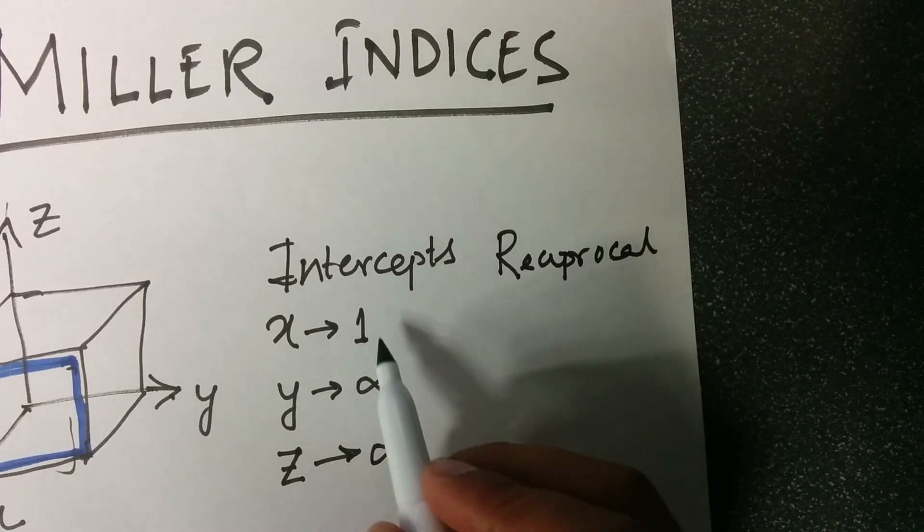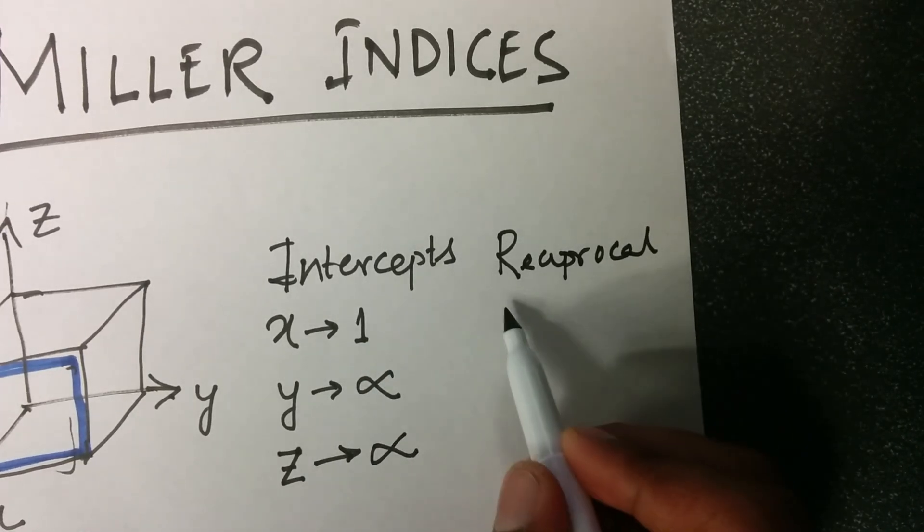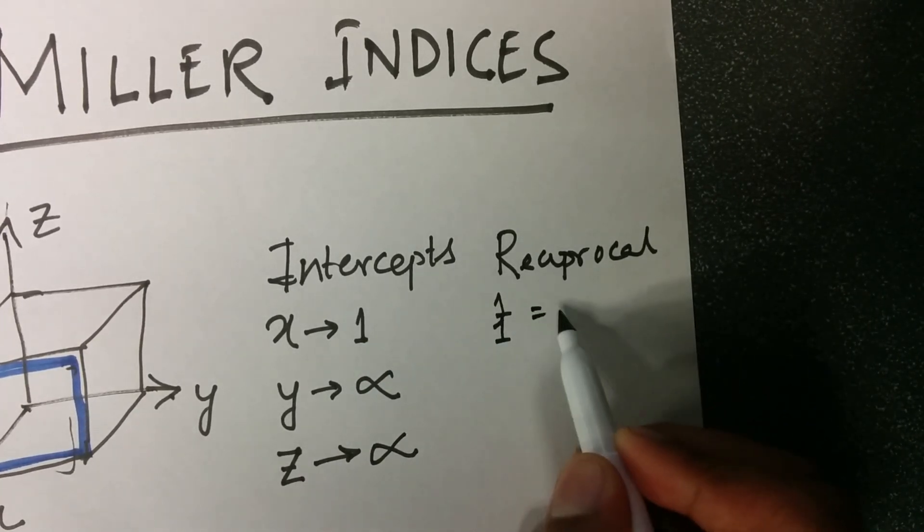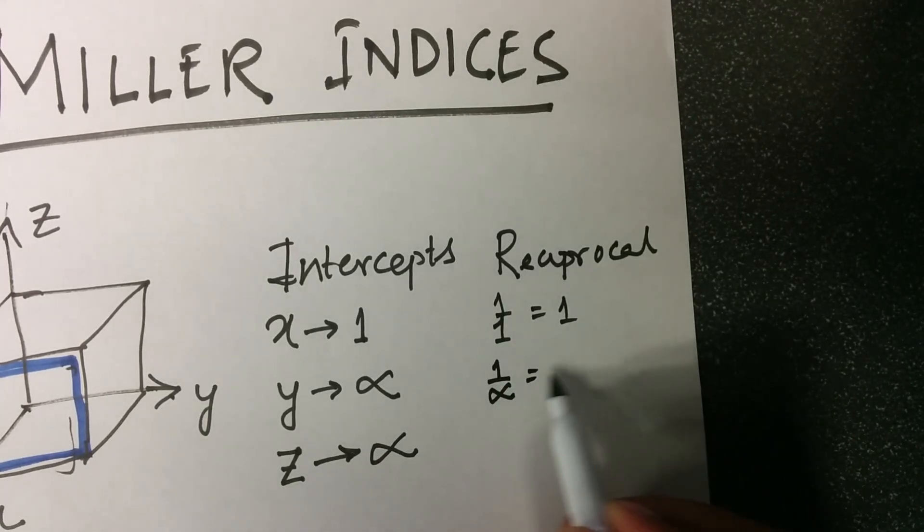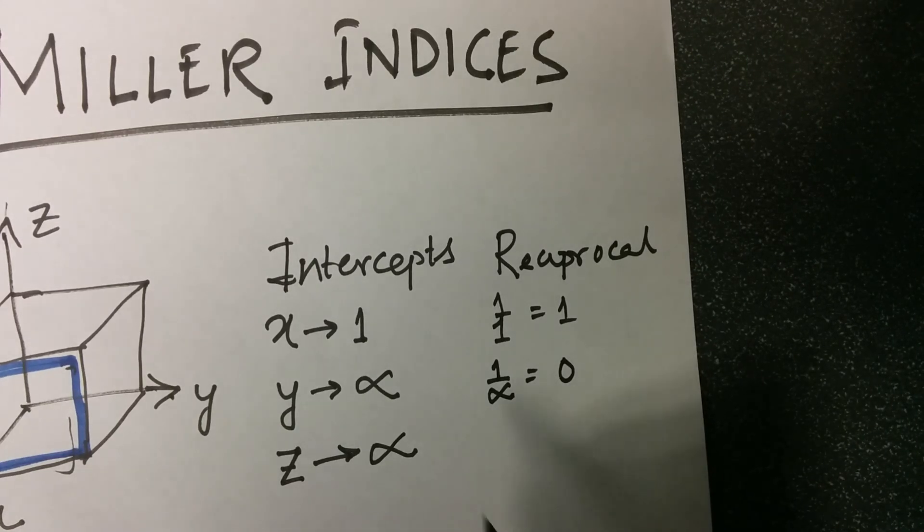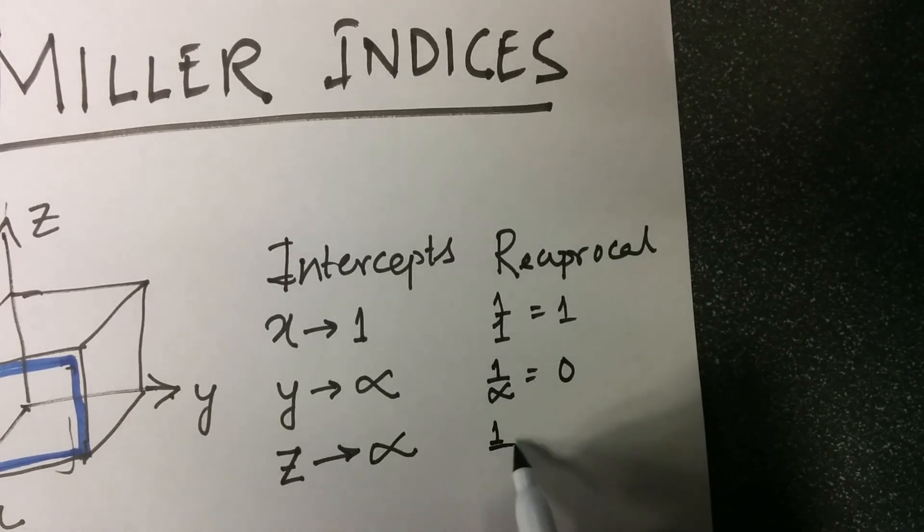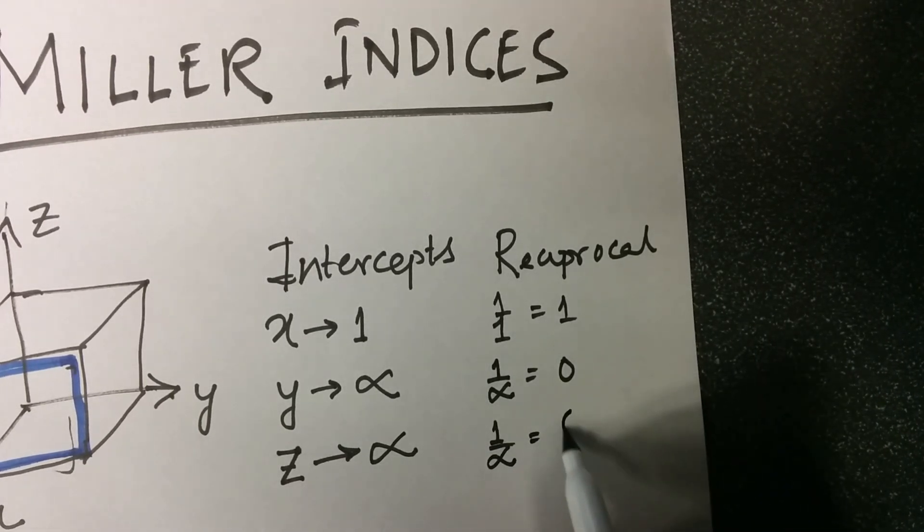The reciprocal of x-axis is 1 by 1, which is 1. Reciprocal of y-axis is 1 by infinity, is equal to 0. And the reciprocal of z-axis is again 1 by infinity, is equal to 0.